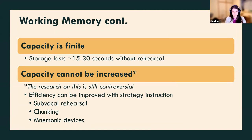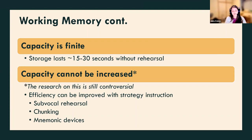Some techniques you can use include sub-vocal rehearsal. Let's say you're trying to remember a phone number and you don't have anywhere to write it down, so you start repeating it over and over in your head: 1-2-3-4-5-6-7-8-9. That is sub-vocal rehearsal — you're not saying it out loud, just articulating it over and over in your thoughts to keep it there. Another technique is called chunking: with a phone number you might group 1-2-3 as a chunk, 4-5-6 as a chunk, 7-8-9 as a chunk, so you only have three things to remember instead of nine distinct numbers.